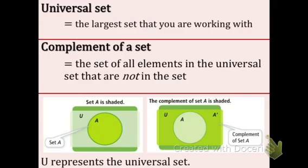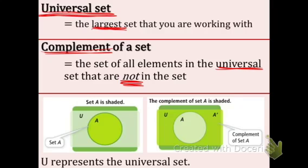Okay, there's something called a universal set. And this is top right corner of your note sheet. Universal set. What does universal mean? It's the largest set that you are working with. Such as universe is very large. Complement of a set is the set of all elements in the universal set that are not in the set. Not is the key word.